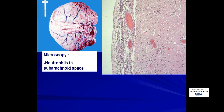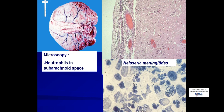For example, this is a histologic section showing the CSF in the subarachnoid space. We can see lots of neutrophils here. And we may occasionally be lucky enough to be able to see the causative organisms. In this case, it is Neisseria meningitidis, which is an intracellular gram-negative diplococcus.